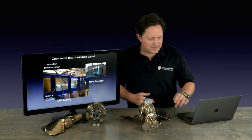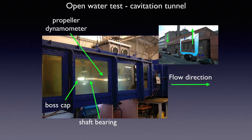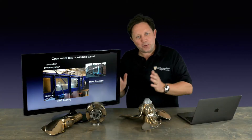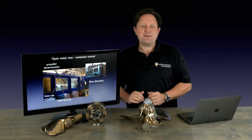The next facility is a cavitation tunnel, which basically runs the same test as the towing tank with one slight difference: the propeller stays where it is and still has a motor driving it, but the water is pushed around instead of the model being dragged through the water. There are other differences to do with scaling atmospheric pressure, but I won't go into that in this episode.